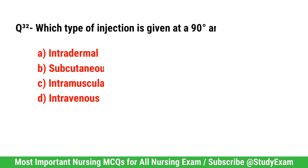Question number 32. Which type of injection is given at a 90 degree angle? Right option is C. Intramuscular.